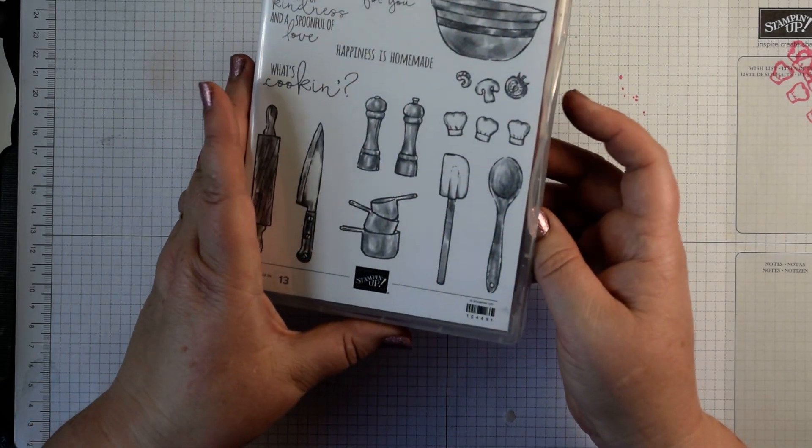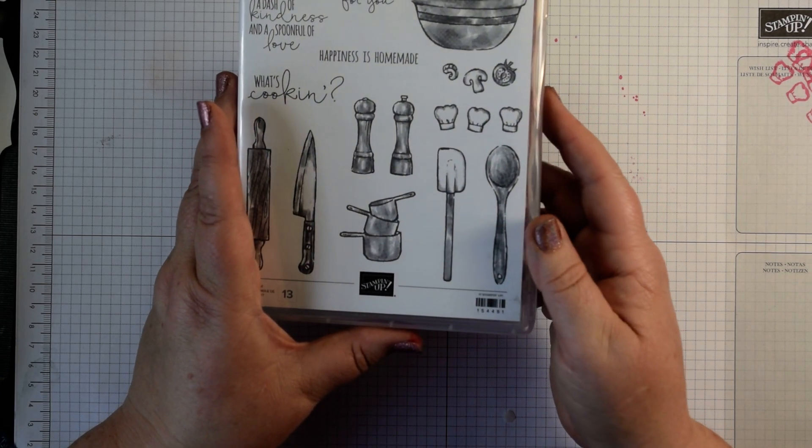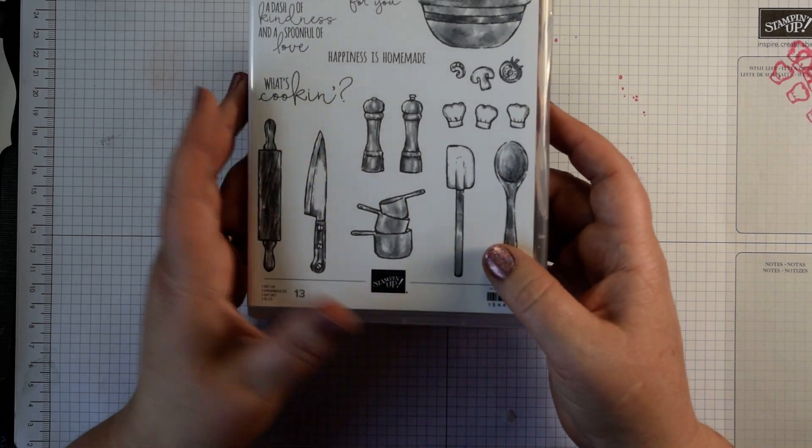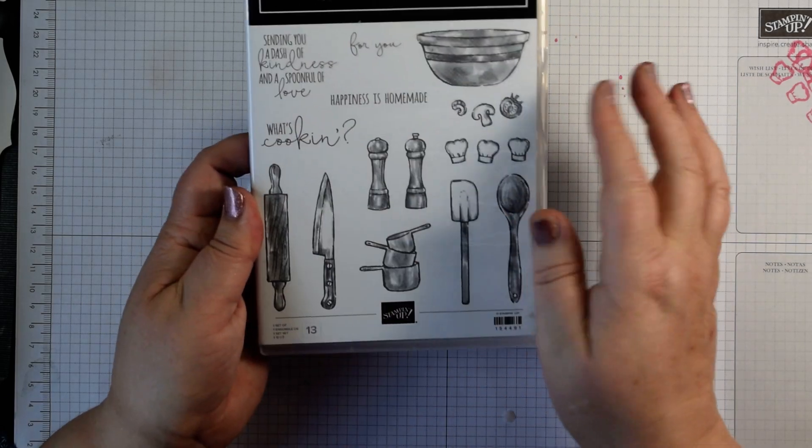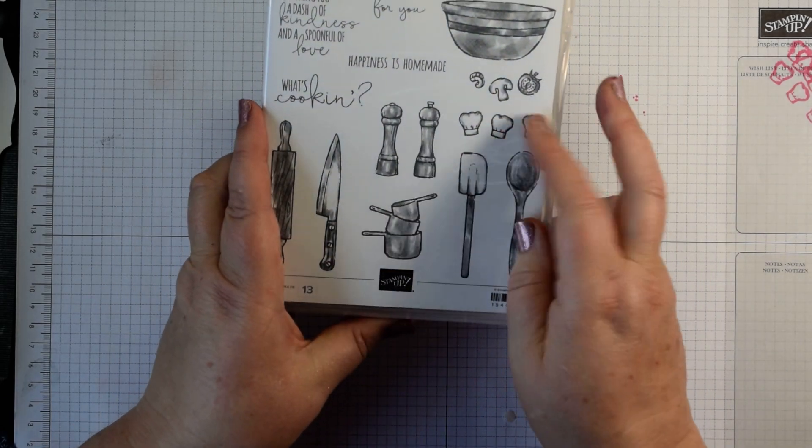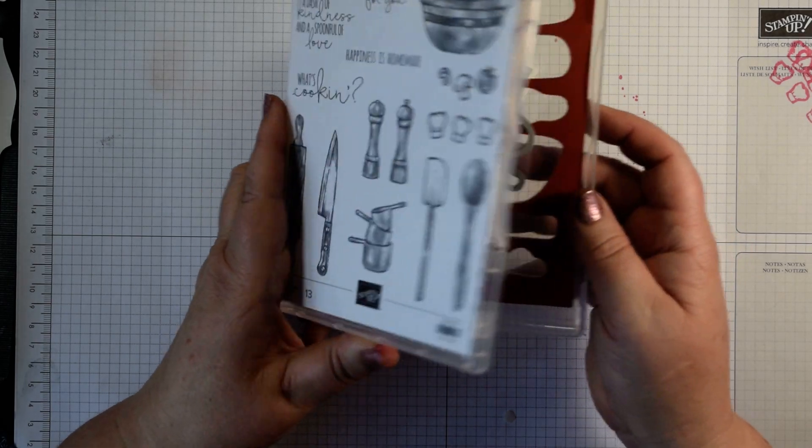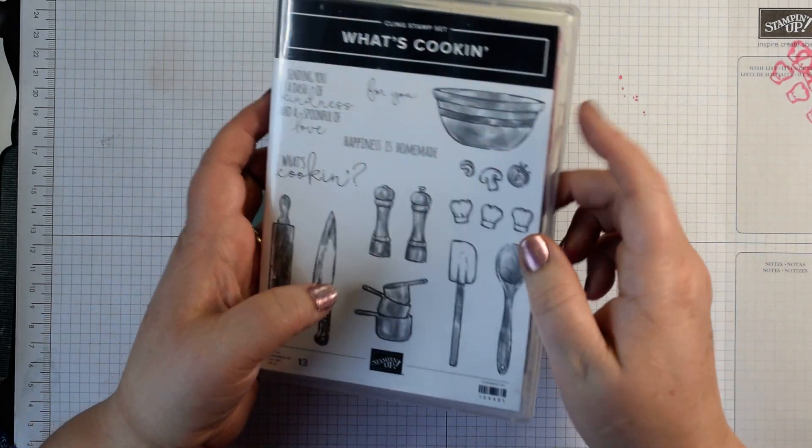It's a lovely bundle in the annual catalogue that you might have overlooked. Great fun for anybody who's a fan of cooking, male or female, lots of people baking at the moment. You've got both baking elements and food preparation elements, some cute little chef's hats as an accent and some sentiments and some dies that cut out the majority of those images.